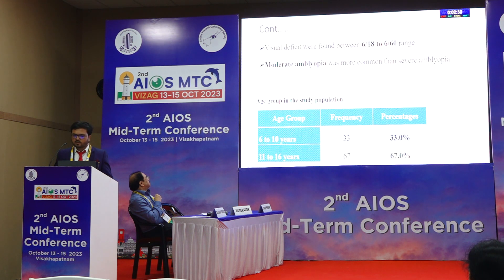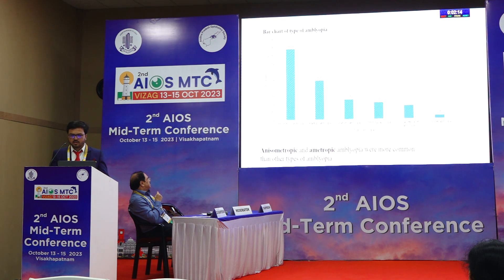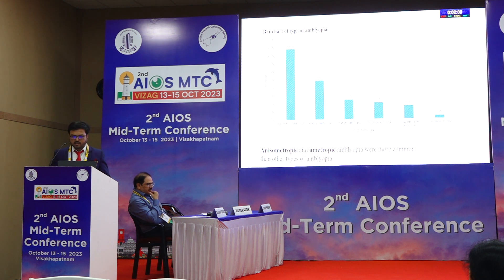Visual deficits were found in the range of 6/18 to 6/60. Moderate amblyopia was more common than severe amblyopia in our study. In the age group 6 to 10 years, 33 percent of the children were affected, and in 11 to 16 years, 67 percent were affected. Anisometropic and ametropic amblyopia were more commonly seen than other types.